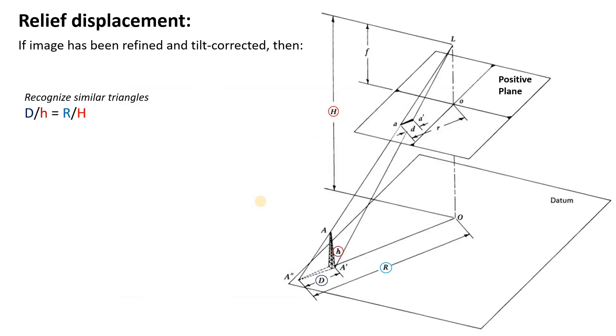And this brings us to our final source of distortion or scale variation in our image, and that is relief displacement. And this is by far the biggest source of distortion. And before I explain how we might correct for this, I want to point out that by this point in the process, our image has been refined and corrected for internal distortions, and it has also been tilt corrected. So everything I'm about to show you essentially assumes a corrected and perfectly vertically oriented image.